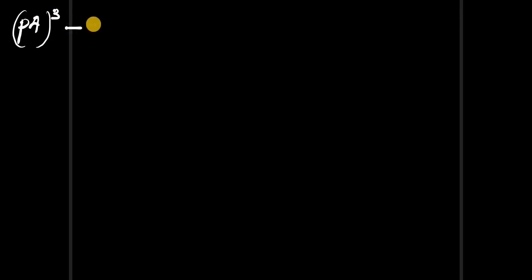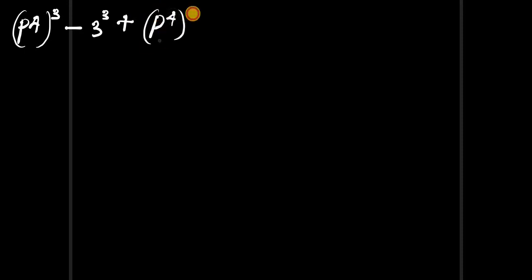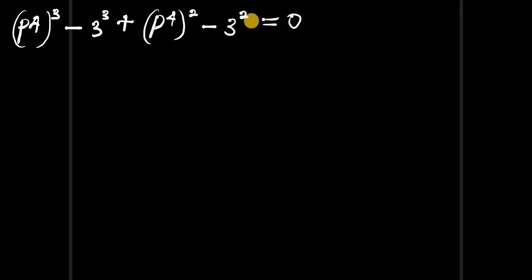We write (p⁴)³ minus 3 to the power of 3, plus (p⁴)² minus 3 to the power of 2, and this equals zero. Now let's make use of algebraic identities.